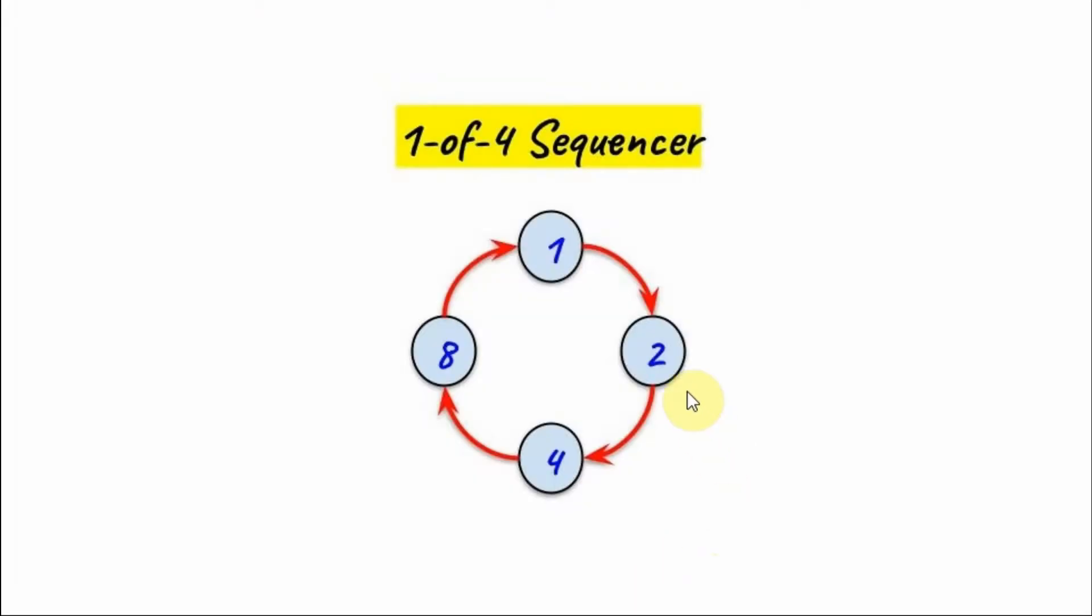The sequence we want to generate using D-type flip-flops is one, two, four, eight, and then repeating. This is also called a one-of-four sequencer.